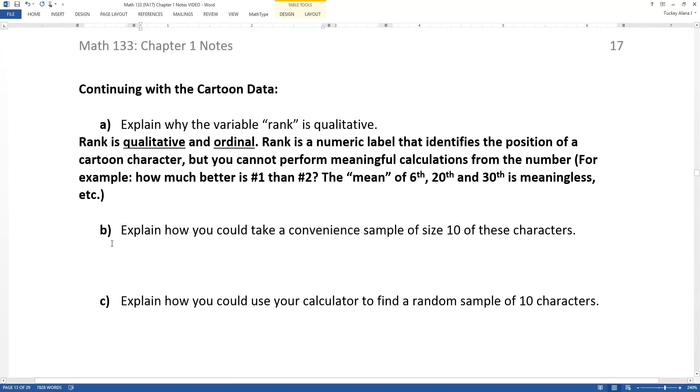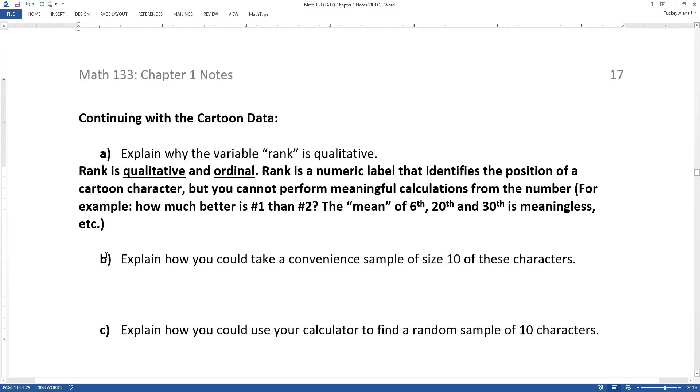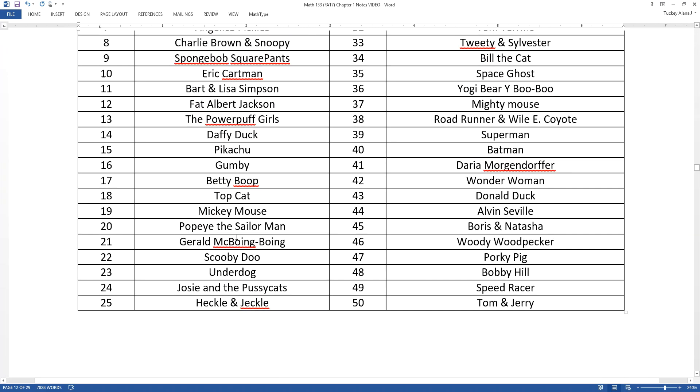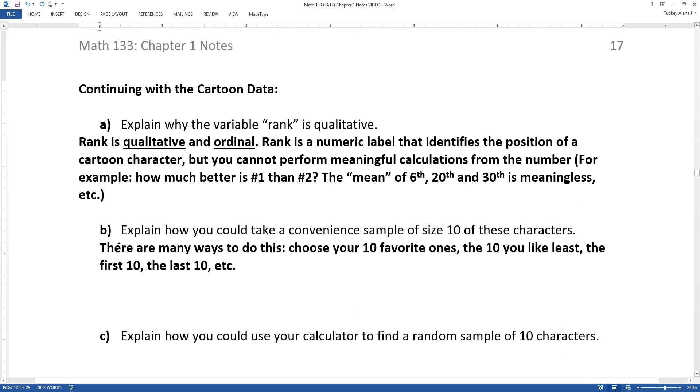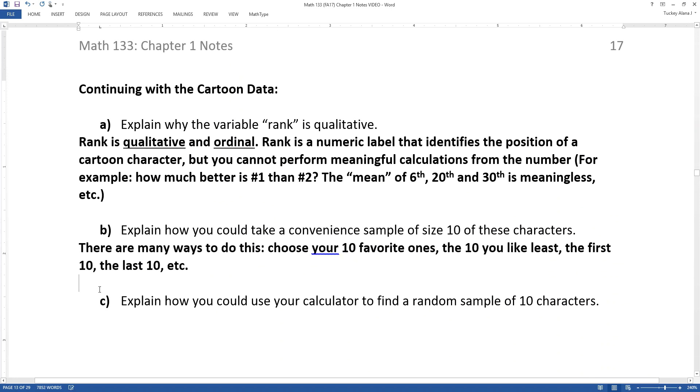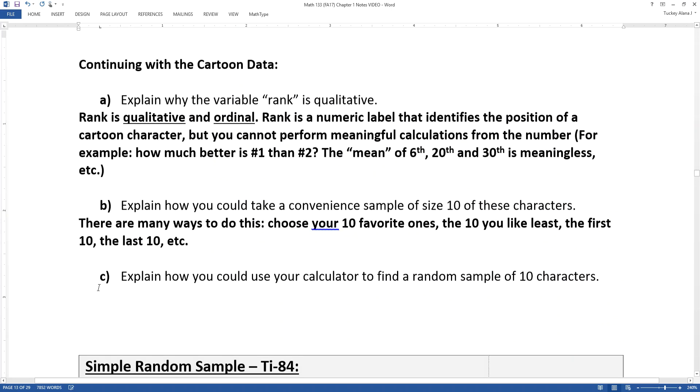Explain how you could take a convenient sample of size 10 of these characters. Well, there are a lot of different ways. You could just pick the 10 that you like the best, or you could pick the 10 that you like the least, or the 10 that you don't know because there's got to be some old ones in here that you might not have ever heard of. Or let's say you just go with the first 10 or the last 10. There are lots of different ways that you could just pick a sample that's convenient for you.